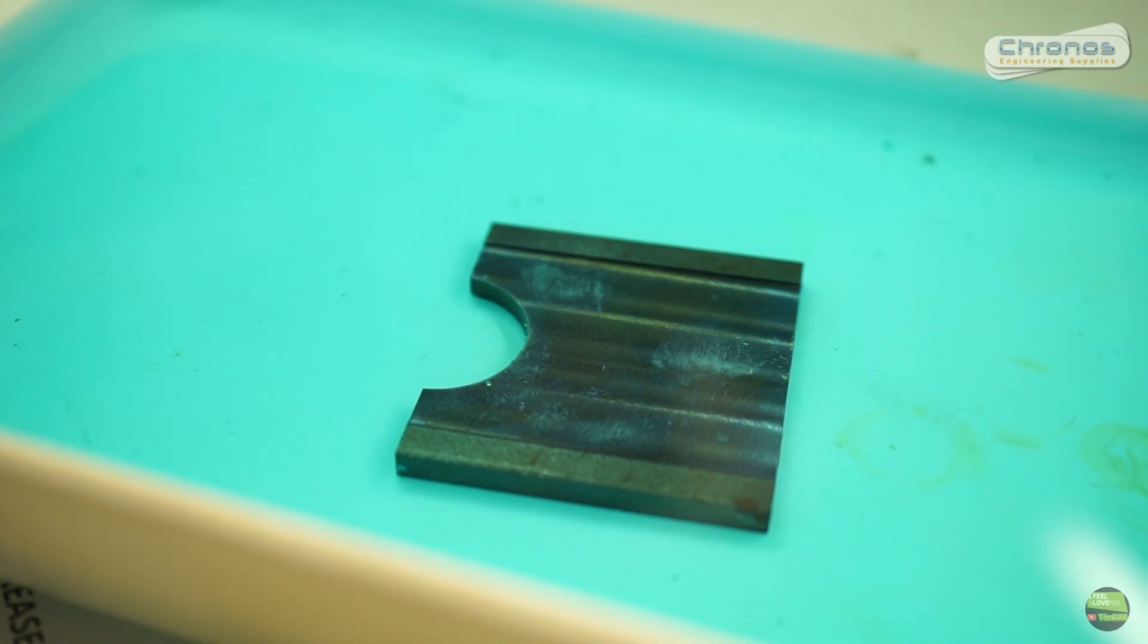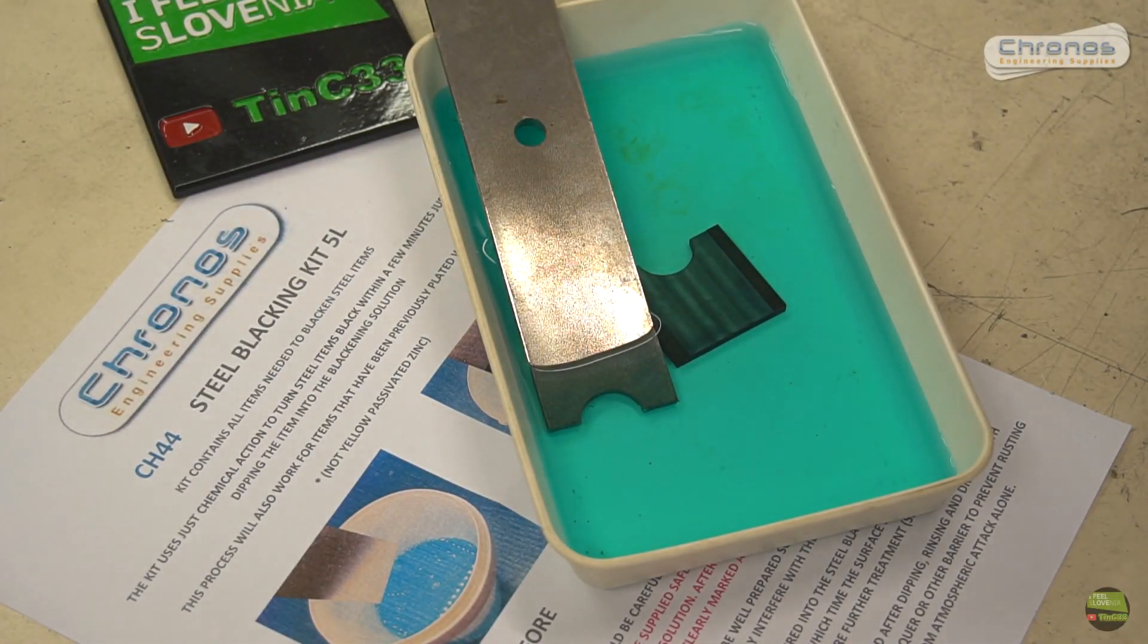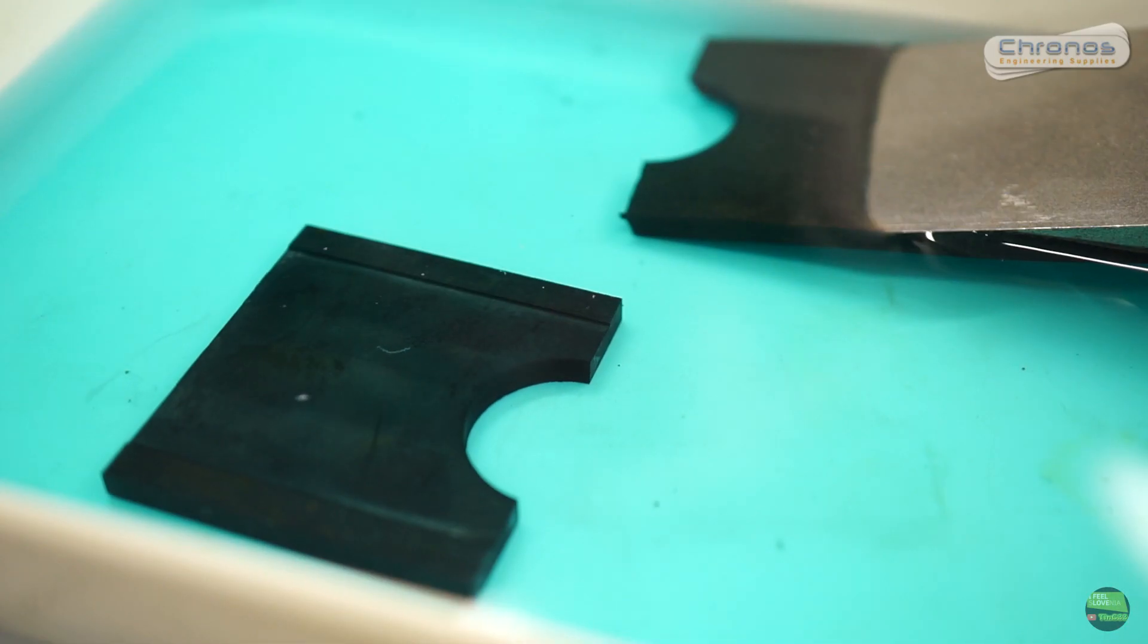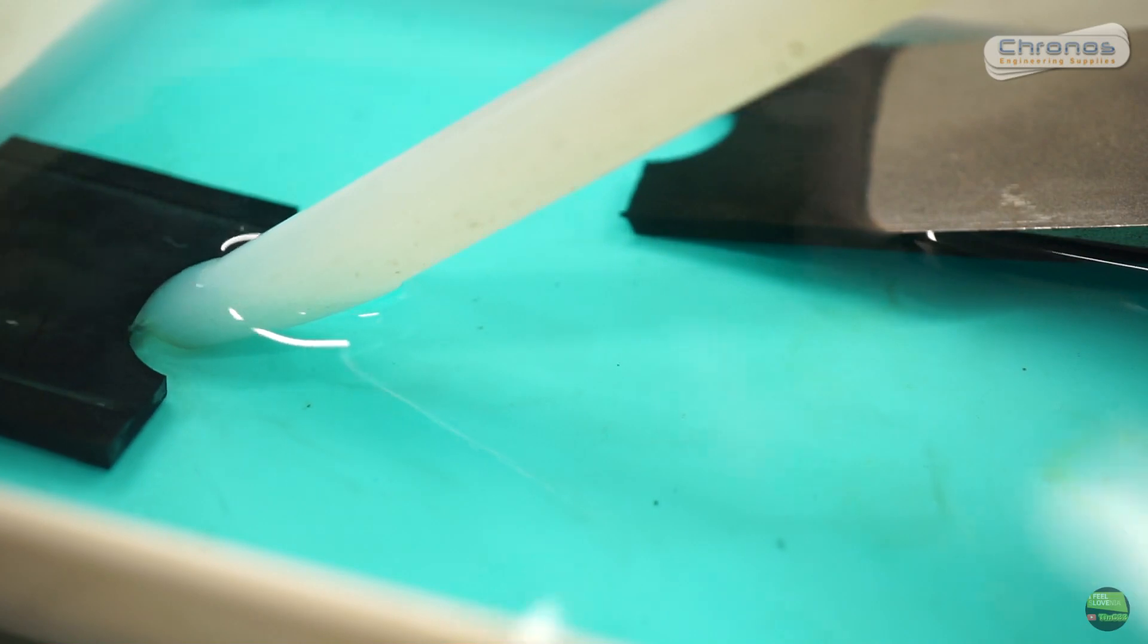When we drop the part in solution we can see that it starts changing color in seconds. After five to ten seconds it's almost black. Every fingerprint and other flaws are visible, but after a minute or two it becomes completely black. Doesn't matter if there are any fingerprints, grease or rust. After about five minutes I turn the parts around so they're evenly blacked all around.